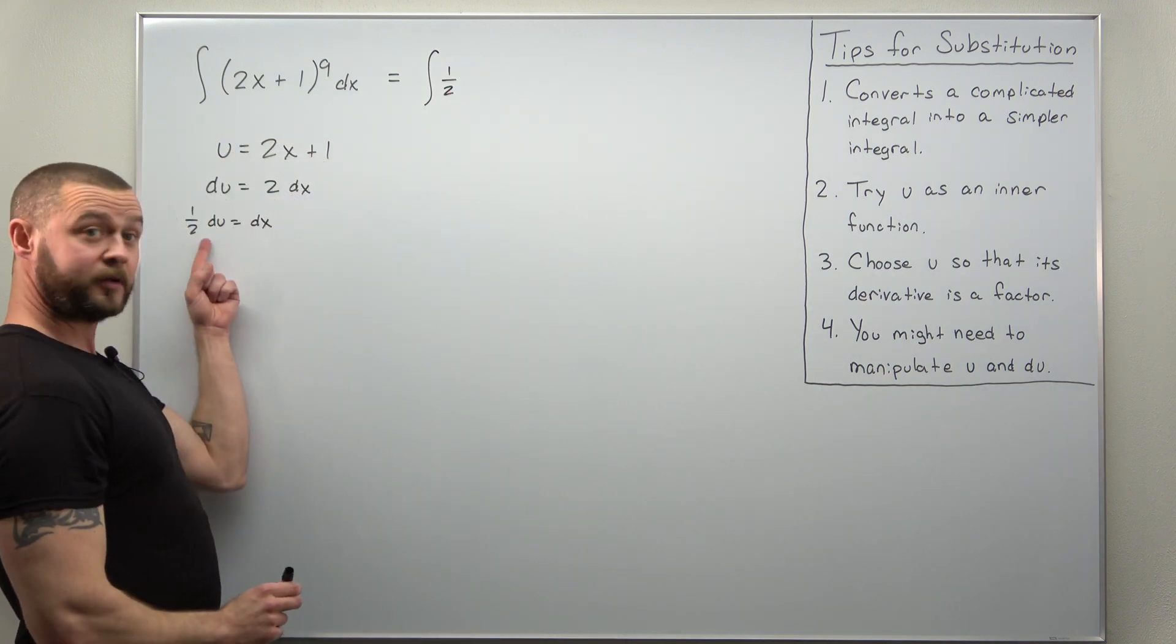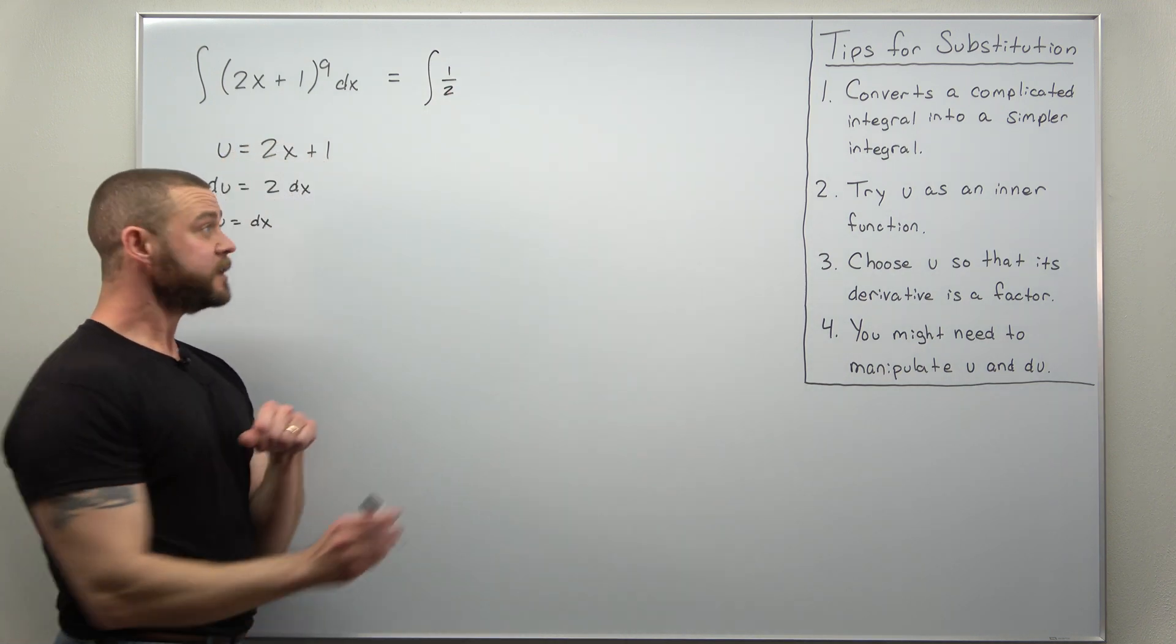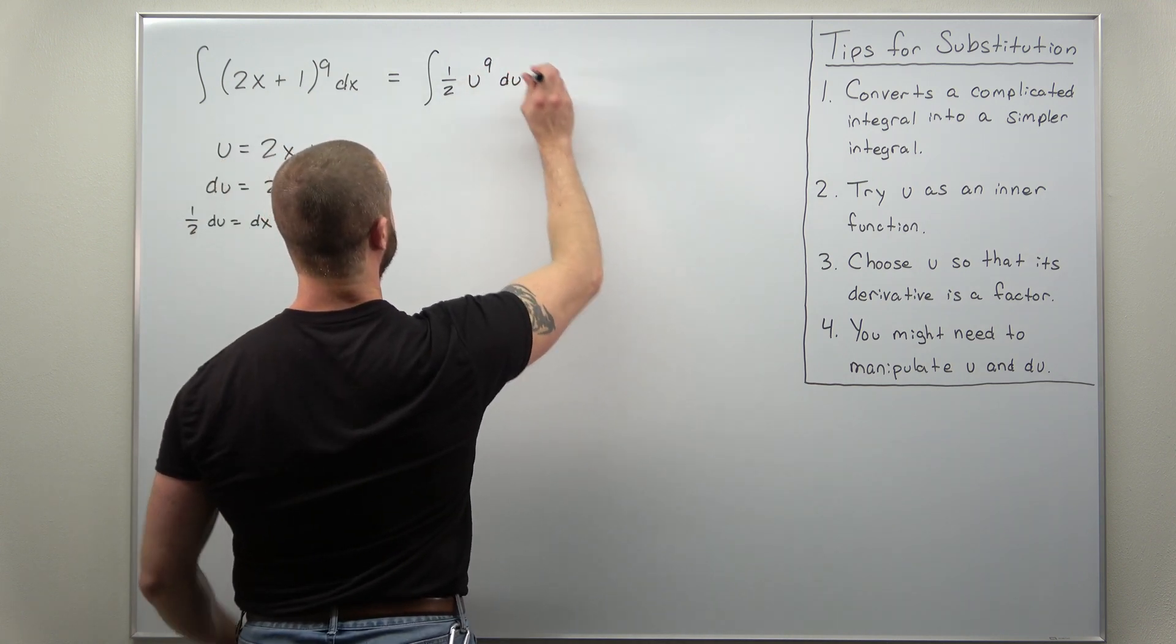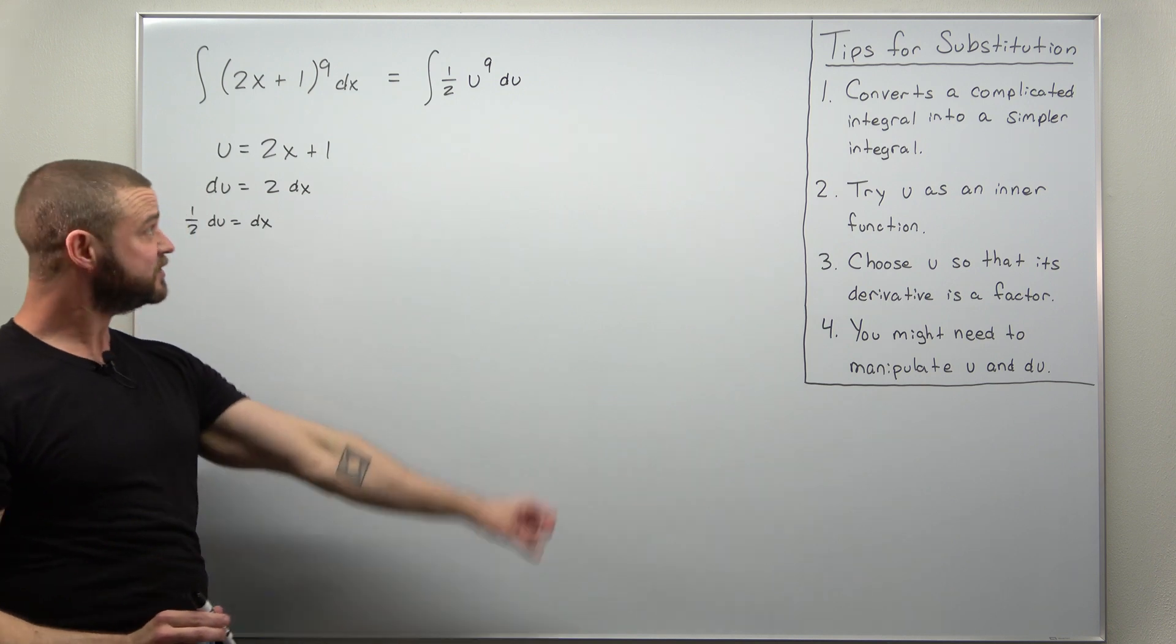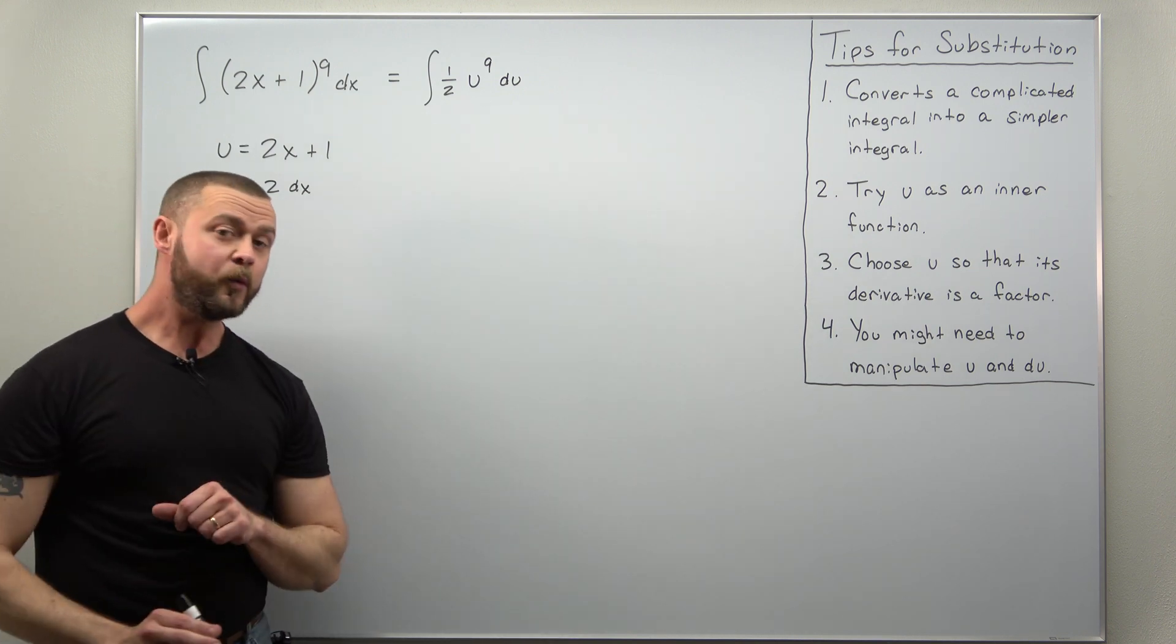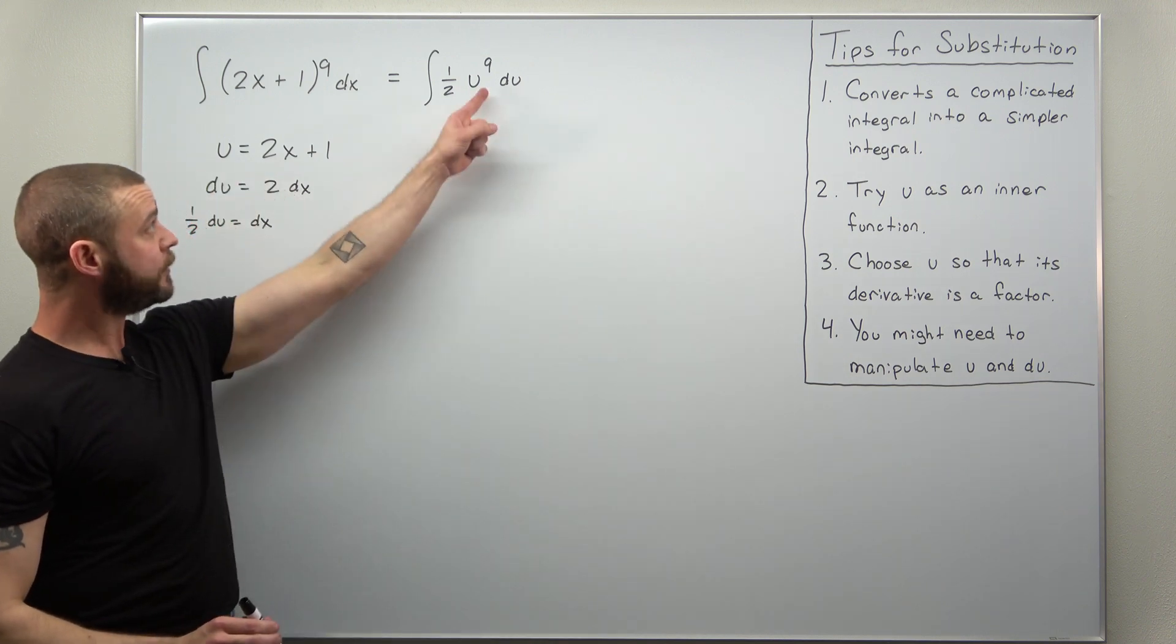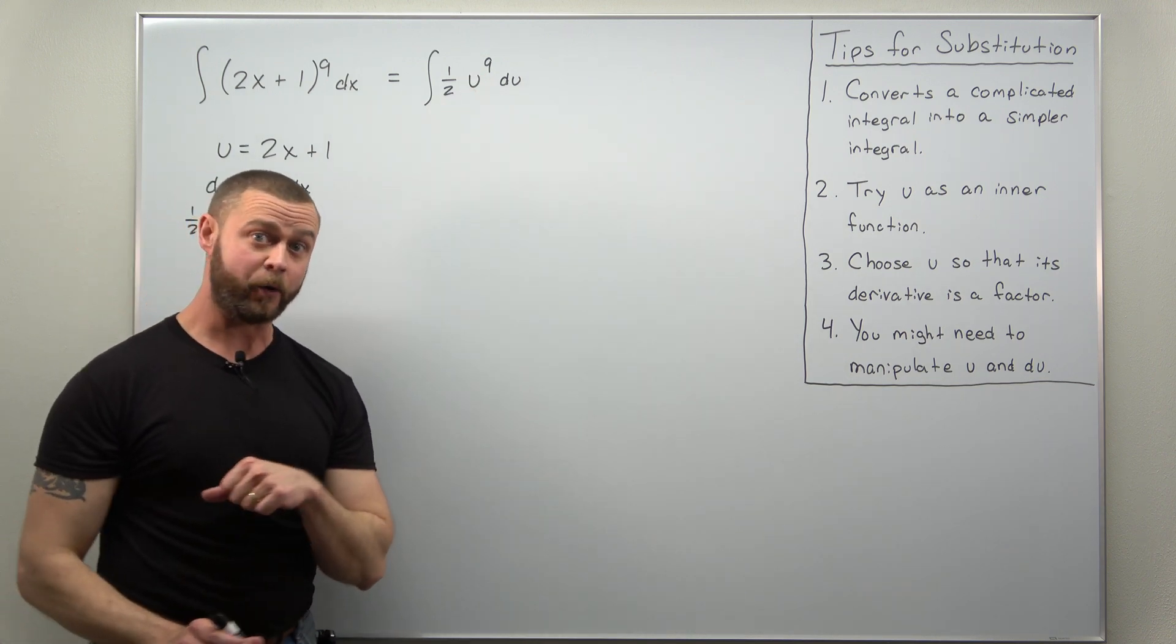We have here 1 half u to the 9th times du, and this is extremely simple. Here we can find an antiderivative using the basic power rule where we add 1 to the exponent and divide by the new power.